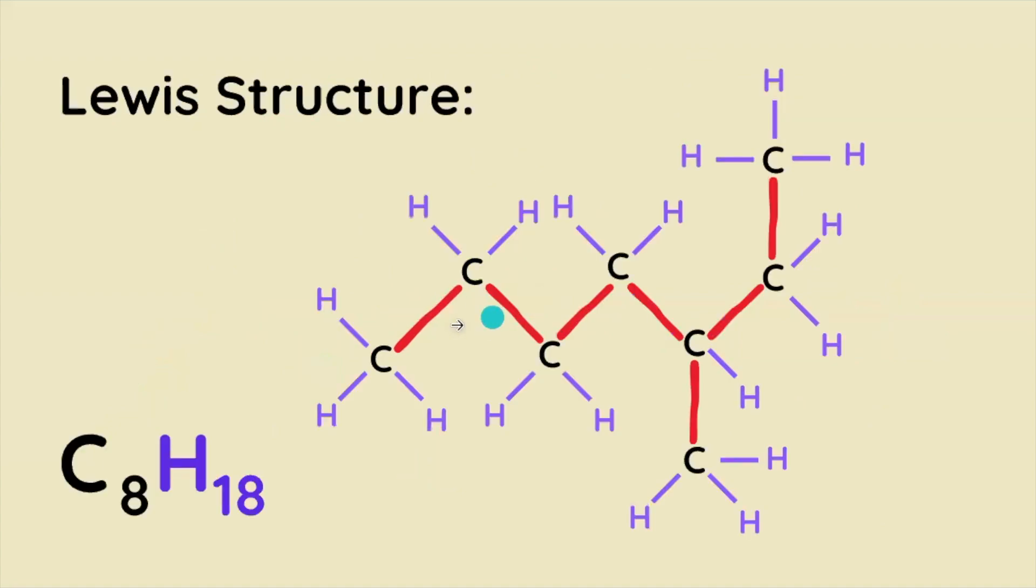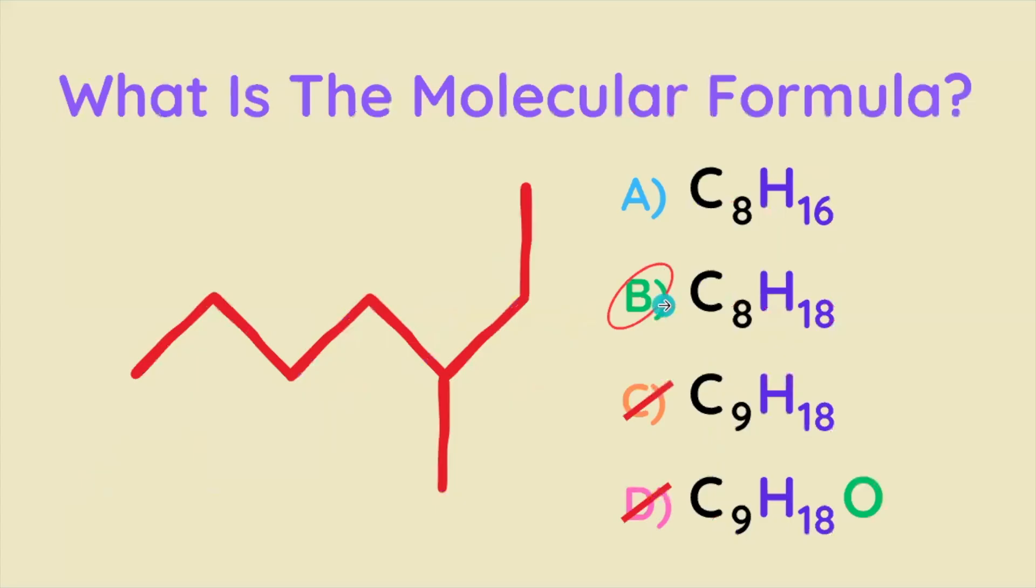Fill in all the hydrogens and then we get the final Lewis structure and we know that C8H18 is the correct answer because there are literally 8 carbons and 18 hydrogens. So that means that B is our answer. That's the correct molecular formula.